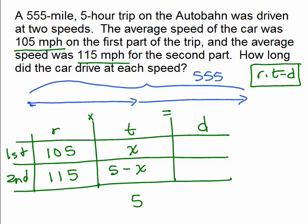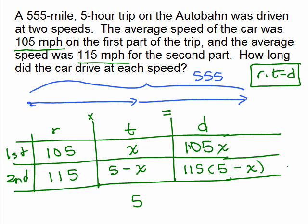So now, what's the distance for the first part? We have to do rate times time, which is 105x. All right, so now I go back up to the picture. So in this first part, I've got 105x. And in the second part, let's see, if I do the distributive property, that's 575 minus 115x.